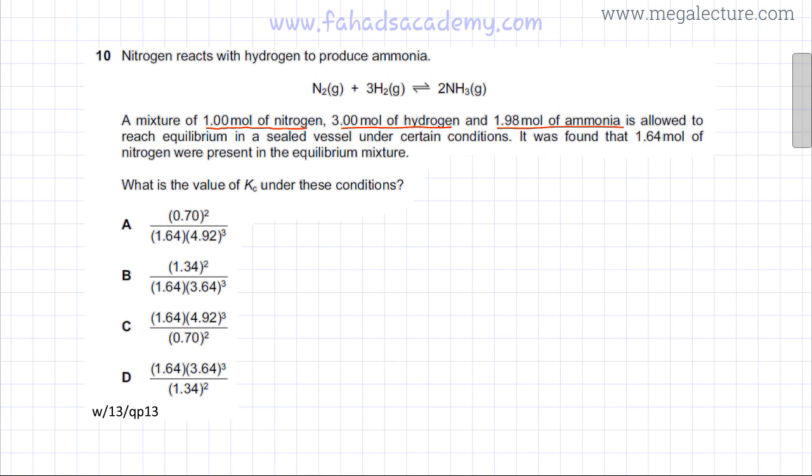So I'm going to write this down and rewrite the equation: N2 plus 3H2, and there is a reversible reaction, and they're forming 2 NH3. All of them are gaseous. So my initial moles that have been added into the sealed container are one mole of nitrogen, three moles of H2, and 1.98 moles of ammonia.